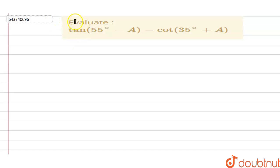The question is: evaluate tan(55° - A) - cot(35° + A). Let's write the question first. The question states as tan(55°) minus A minus cot of 35° plus A. So from trigonometric complementary angle we know